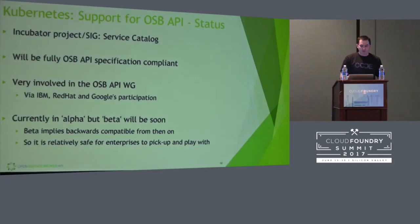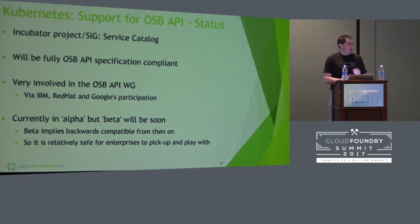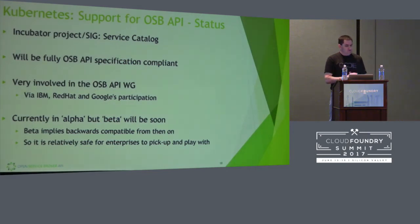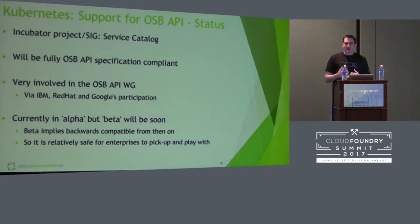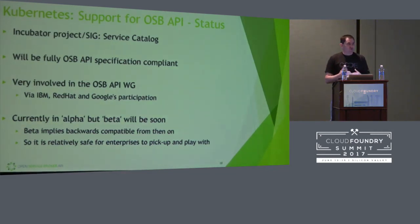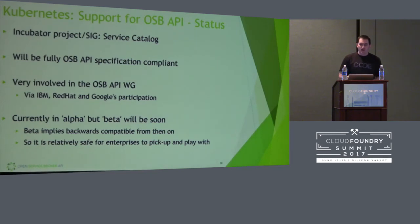In terms of status, we have a special interest group and an incubator project, both called Service Catalog. We are planning on being fully Service Broker API compliant going forward. IBM, Red Hat, and Google are very involved in both organizations, providing great synergy. A lot of what we have right now is in alpha form, but we are very close to beta. From a Kubernetes perspective, beta means end users can assume the APIs will be stable going forward — you can start playing with it and be assured we won't break you. We're less than about a week or two away from that milestone, at which point I'd feel comfortable telling people to really start hammering it and let us know what you think.